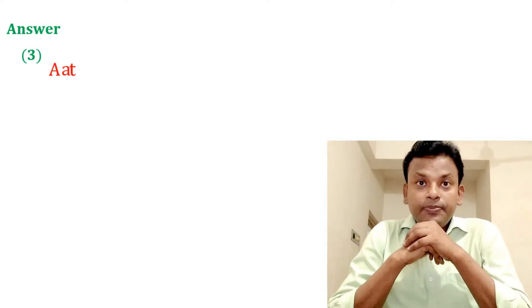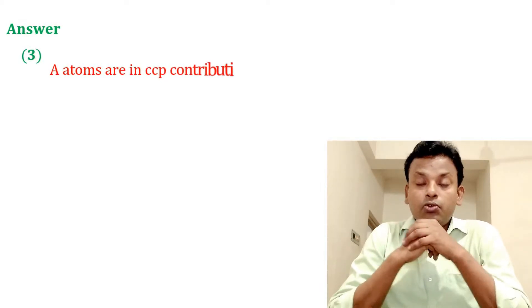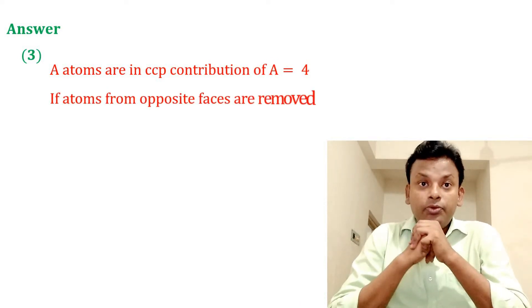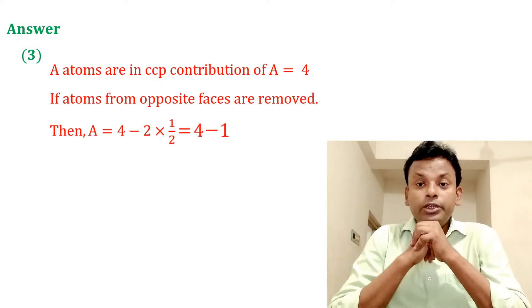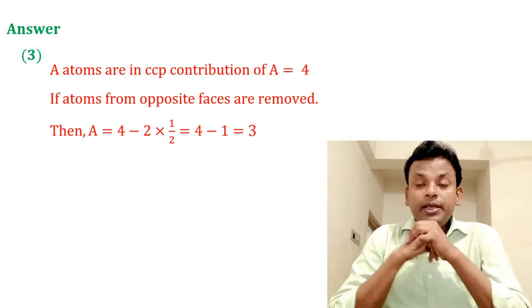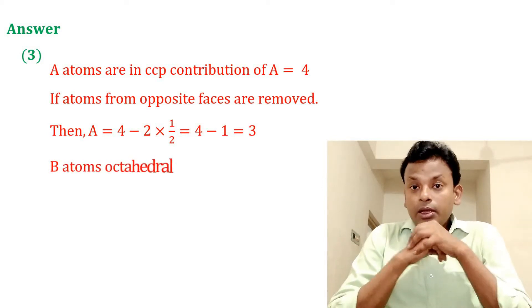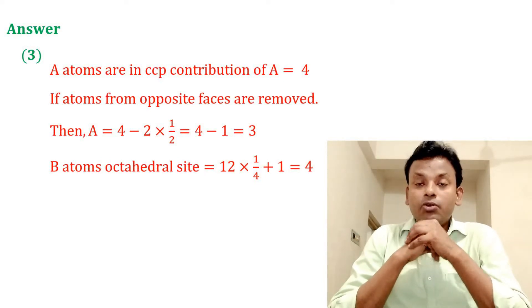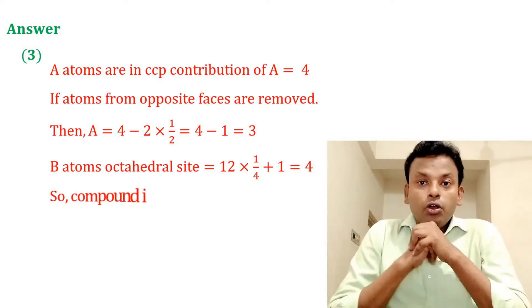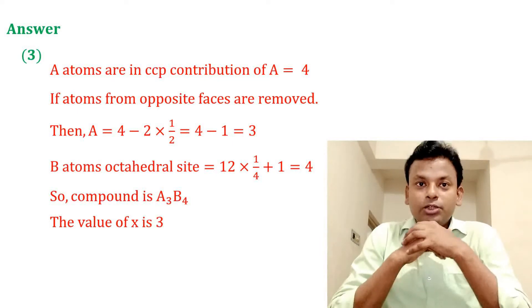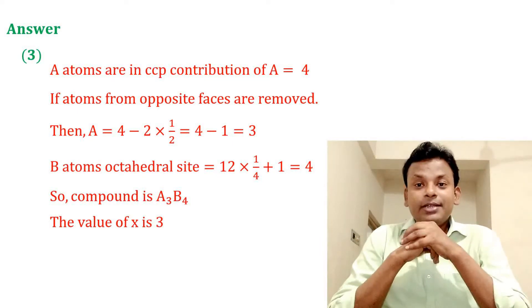Answer is 3. A atoms in CCP: contribution of A = 4. If atoms from opposite faces are removed, then A = 4 − 2 × (1/2) = 4 − 1 = 3. B atoms in octahedral sites: 12 × (1/4) + 1 = 4. So the compound is A₃B₄. The value of X = 3. So the answer is 3.